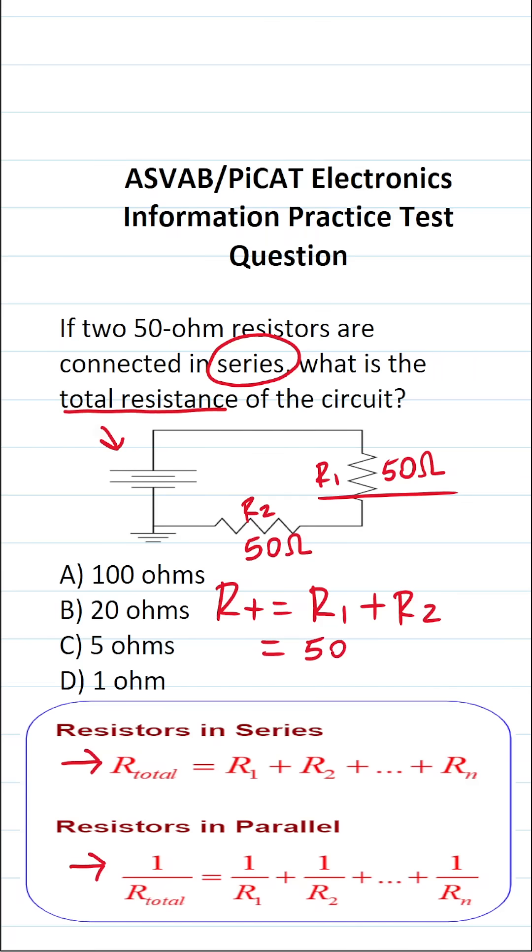R1 is 50, so this is 50. R2 is 50, so this is 50. 50 plus 50 is 100. So what is the total resistance of this circuit? It's going to be A, 100 ohms.